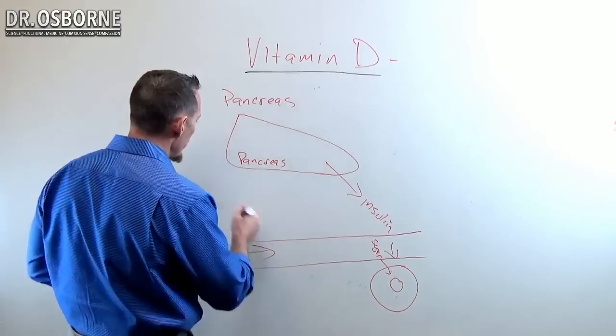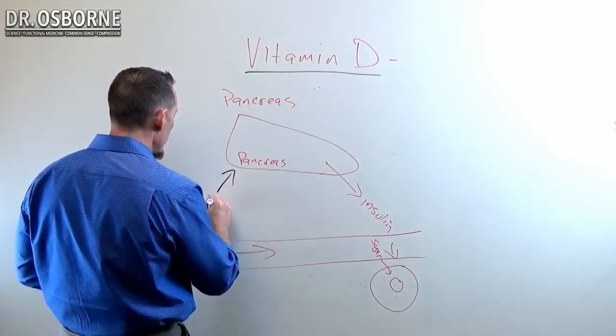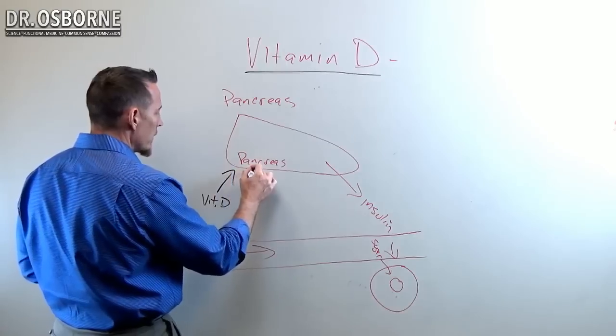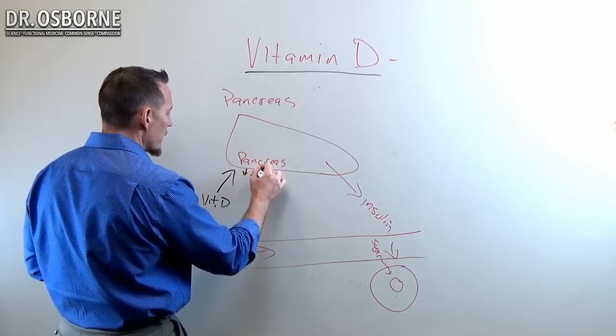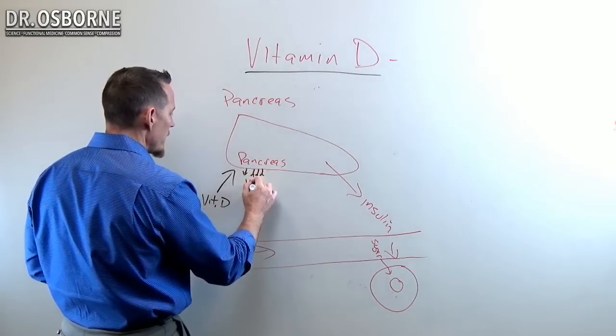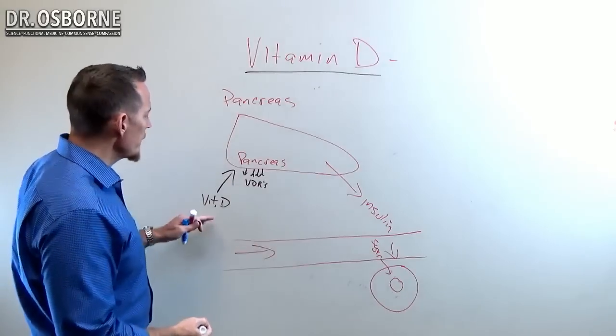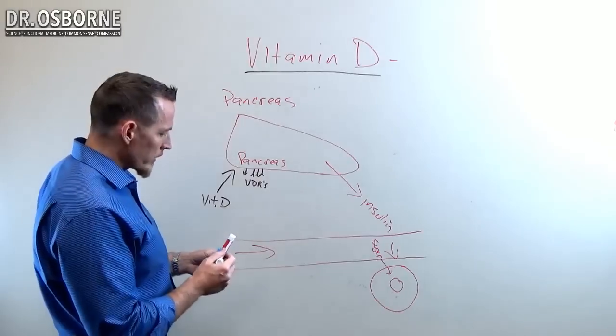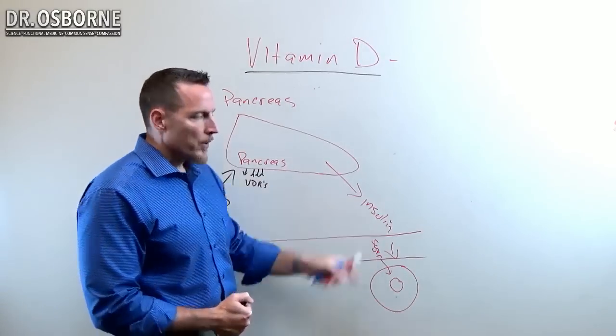Vitamin D—you have on the pancreas a number of vitamin D receptors called VDRs. When you have adequate vitamin D and that vitamin D connects to those pancreatic receptors, it stimulates the production of insulin which then can help you regulate your blood sugar.